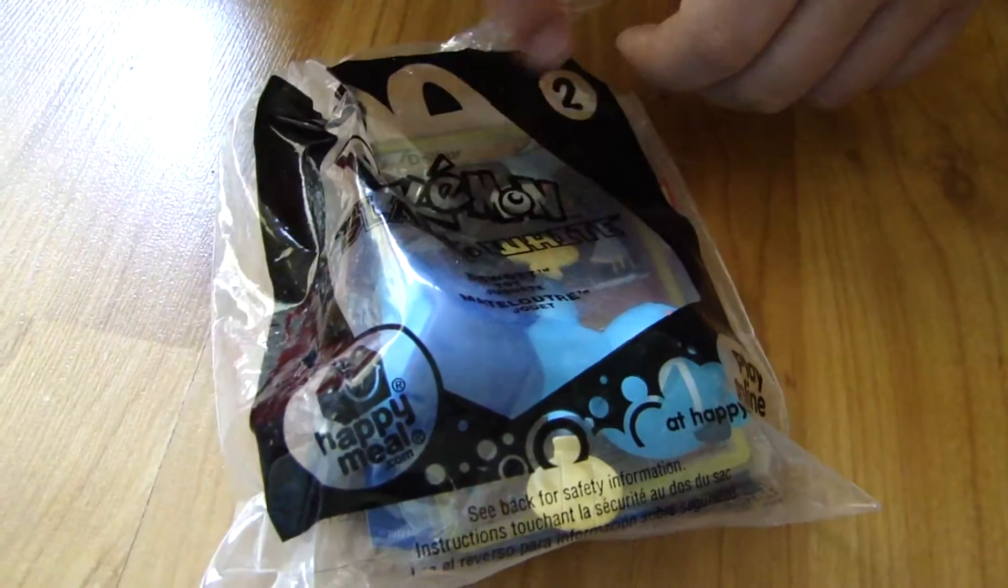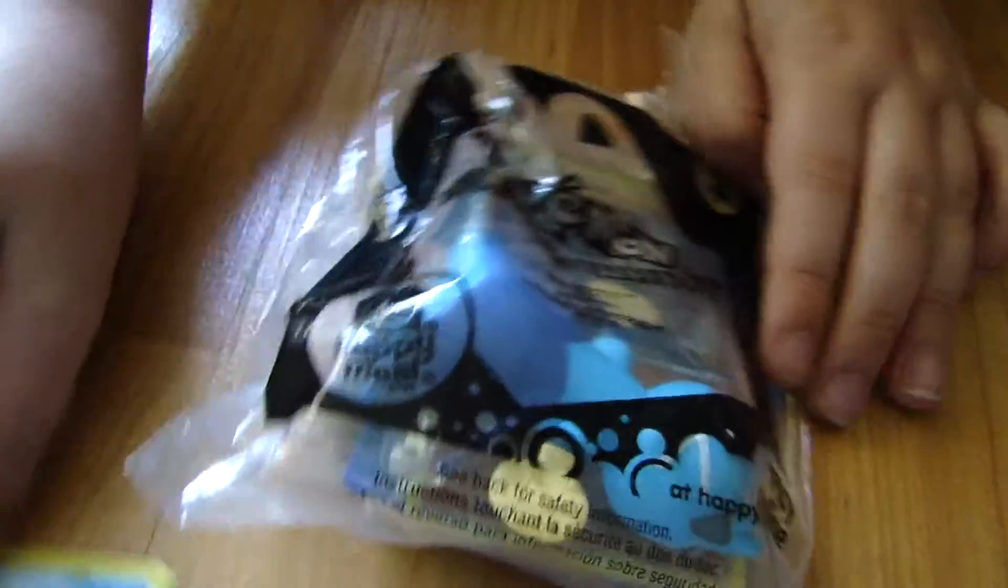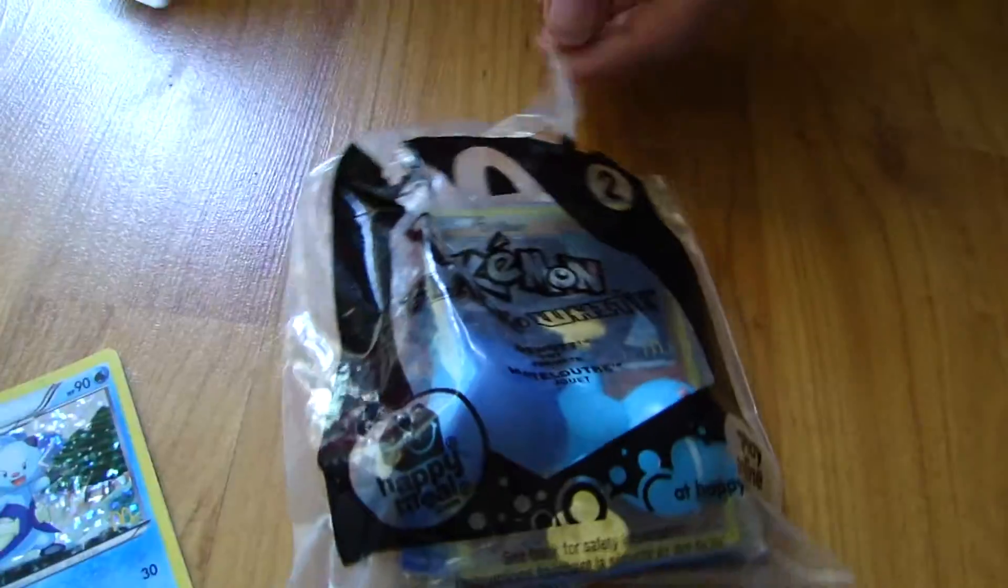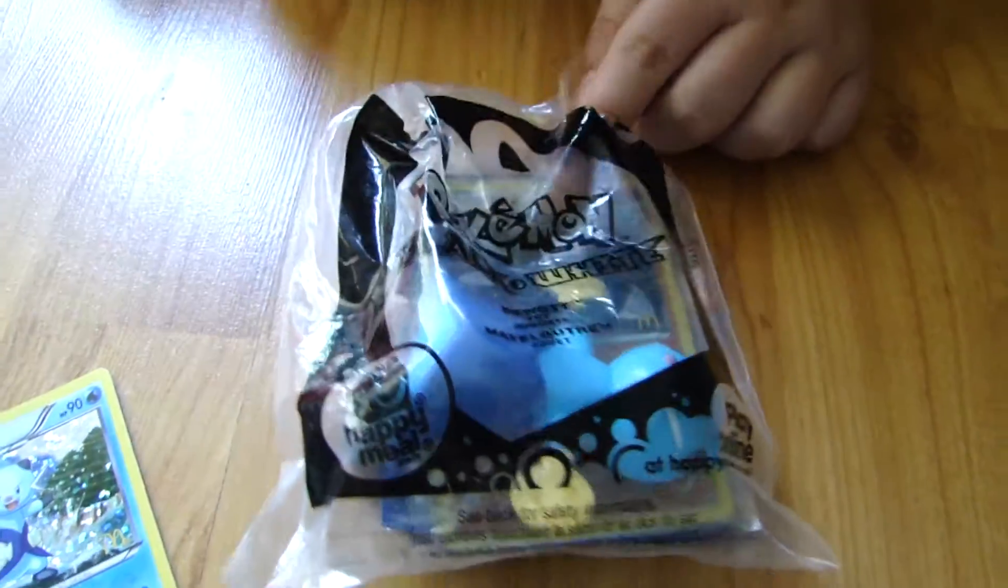Pokemon Black and White, his name is Doo, number two, Doo-Wat. I got the Doo-Wat card from Pikachu, and I want to open Doo-Wat. There's no Pikachu card in this one.